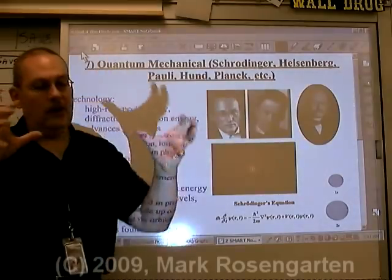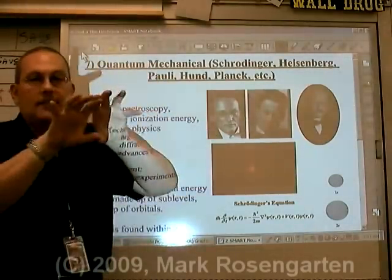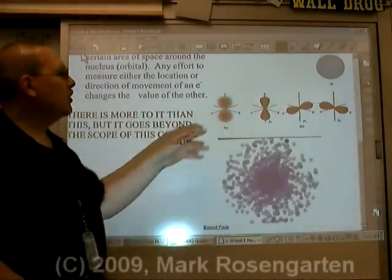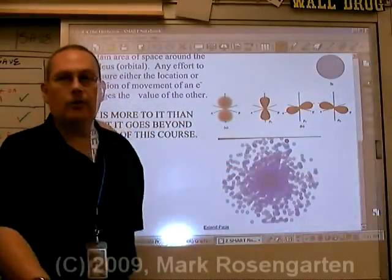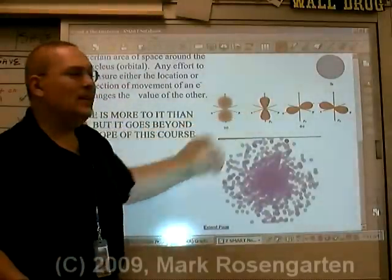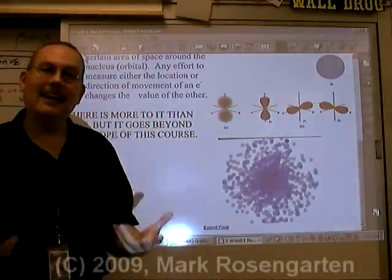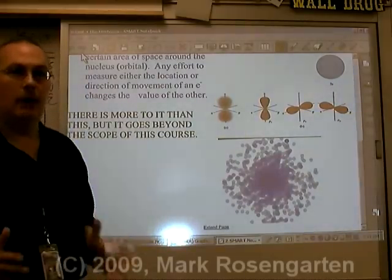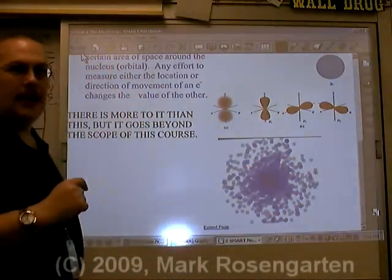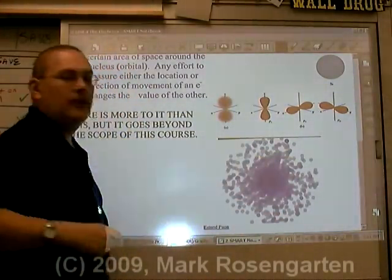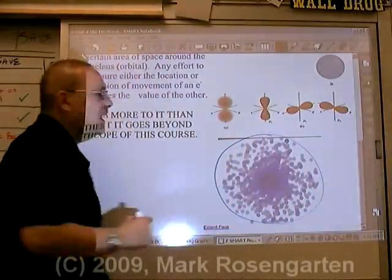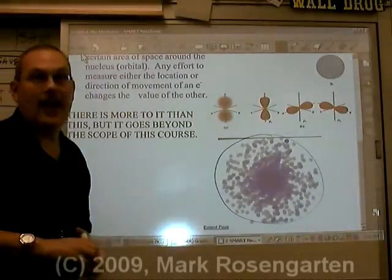So the Heisenberg uncertainty principle says that you can't actually describe where an electron is in an atom. All you can do is define an area of space around the nucleus where you're most likely to find an electron. This has led to the orbital theory. Electrons are found in orbitals around the nucleus — they're not orbiting like planets around the sun. These dots represent the position of an electron at any given instant; you can see that you'll never know exactly where the electron is, but you can define the basic region of space around the nucleus where you might expect to find it.